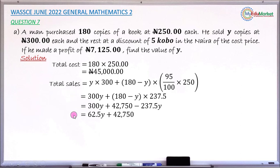Now find the profit. The total profit equals total sales minus total cost. Total profit is 62.5Y plus 42,750 minus 45,000. Collecting like terms, 42,750 minus 45,000 gives minus 2,250. But the total profit is given as 7,125, so I substitute it.